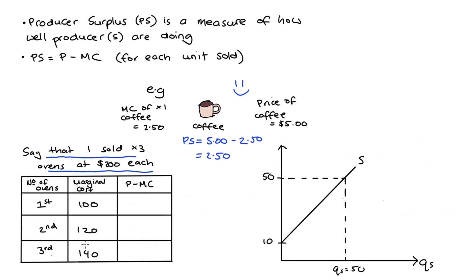I can find the producer surplus just by finding price minus marginal cost for each of these units and then adding those differences up. So in that last column we're going to find P minus MC. For that first unit it's 200 minus 100 so 100. For the second unit it's 200 minus 120 so 80. For the third unit it's 200 minus 140 so 60. The total producer surplus then would be the sum of these differences, so 100 plus 80 plus 60 which is 240.